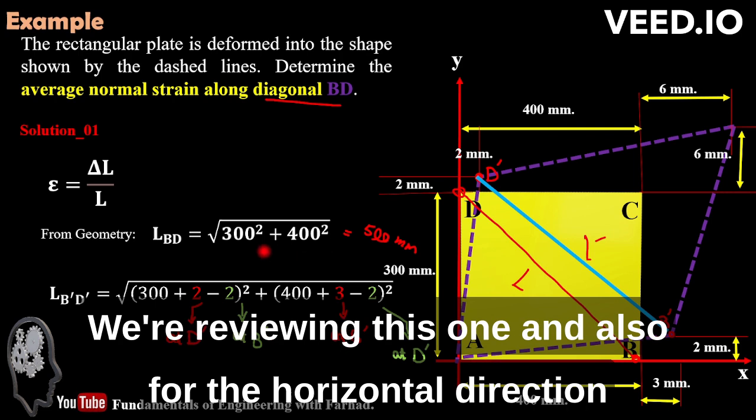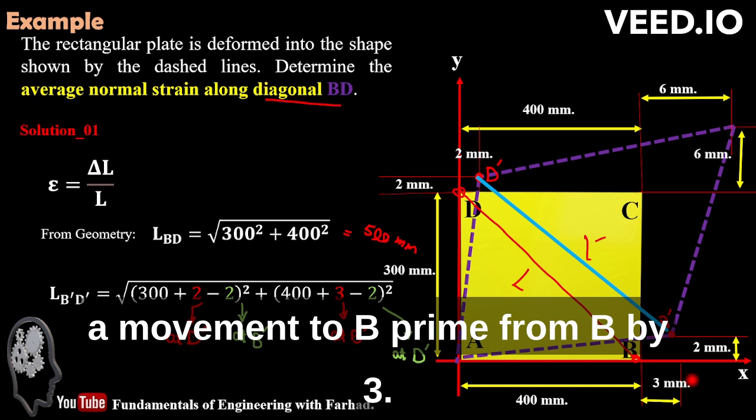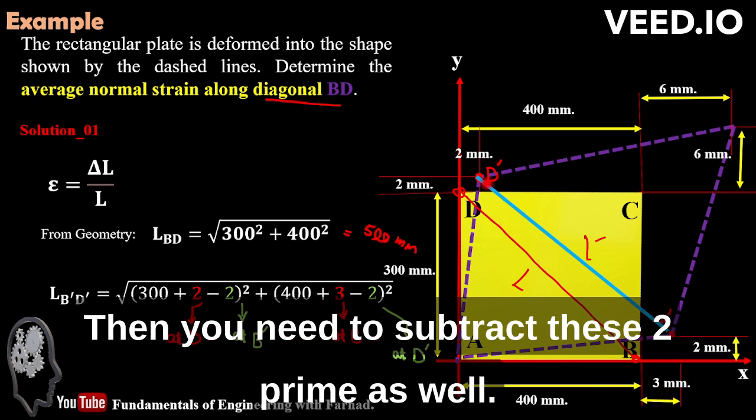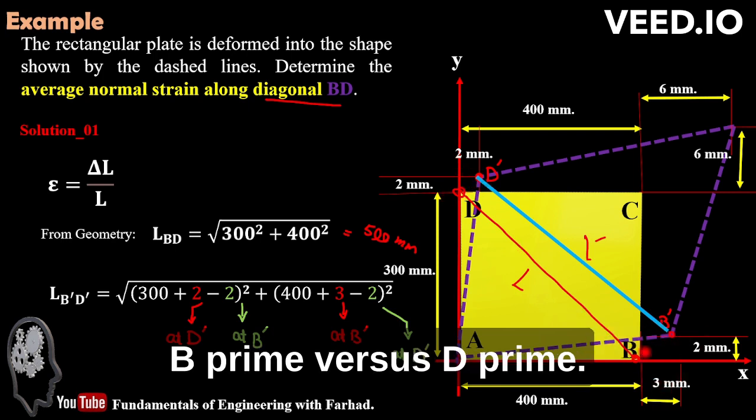And also for the horizontal direction, we have 400 millimeters in terms of x axis, then a movement to B prime from B by 3 millimeters. And then you need to subtract these 2 millimeters at D prime as well. So that's the relative movement of B prime versus D prime.